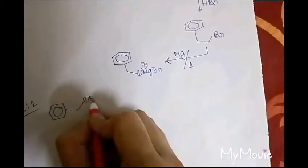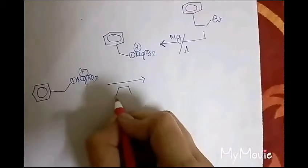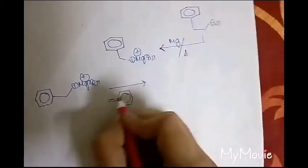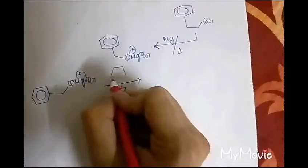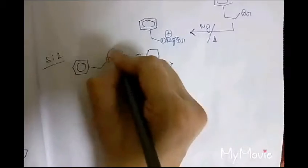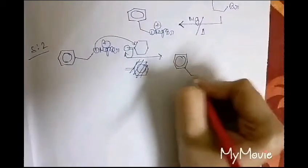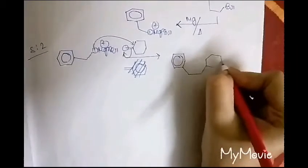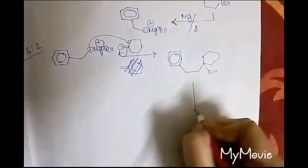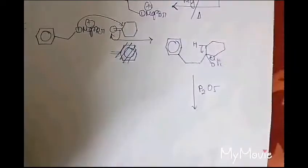In step two, this Grignard compound will react with cyclohexanone. It will attack to the carbonyl carbon position, opening up this bond, and give the resulting alcohol compound.